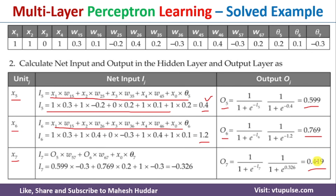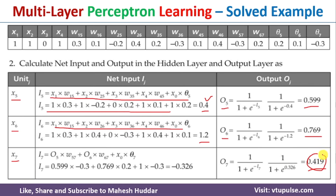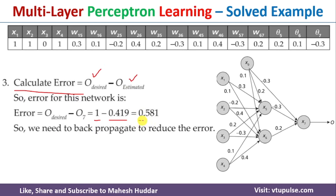This is the output of this particular multi-layer perceptron network. Once we calculate the output at the output layer neuron, we need to calculate the error. The error is the desired output minus the estimated output. The desired output is 1, and the estimated output is 0.419. Putting these values in the equation, the error at the output layer is 0.581. This is the error after the first epoch — the first iteration.